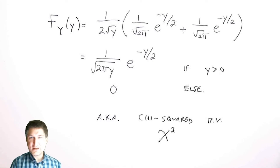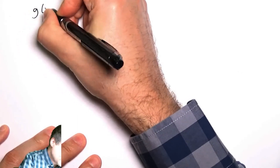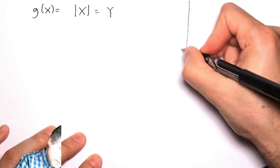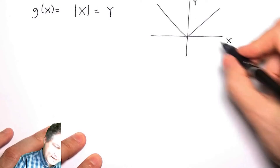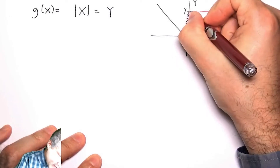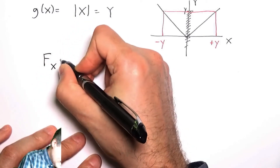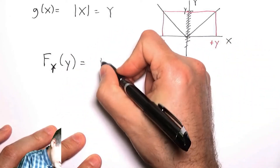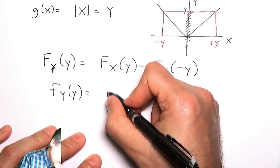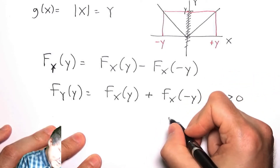Things can get even more complicated. For example, if g(x) = |x|, the absolute value of x, we again draw the picture of the relationship between x and y. The probability that y is less than some value traces back to x being between -y and +y. So the CDF of y is the CDF of x at y minus the CDF of x at -y, and the PDF of y is the PDF at y plus the PDF at -y — again, only for y positive and zero for y negative.